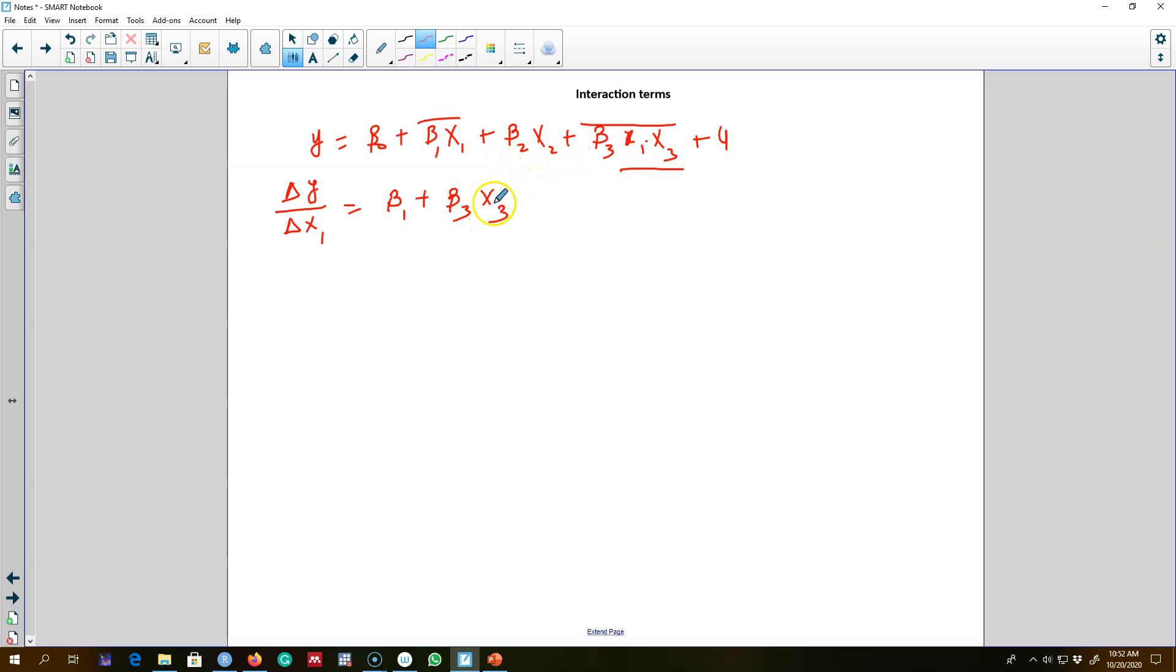In this type of model, the impact of x1 on y depends on another variable x3. This is different than quadratic models we saw earlier, where the impact of x1 depends on its own value. Now the impact of x1 depends on the magnitude of another variable x3, as shown by beta 3.